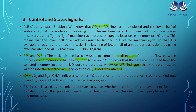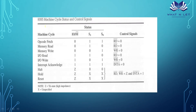Next are the status signals S1 and S0. There are several operations in the processor — opcode fetch, memory read, memory write, and so on. The status signals indicate which particular operation is being performed. A table will make this clearer. Also, the READY signal is used to synchronize slower peripherals to the microprocessor. The processor senses whether the peripheral is ready for data transfer; if not, the processor waits.